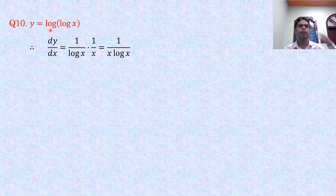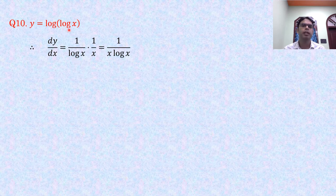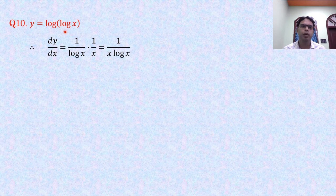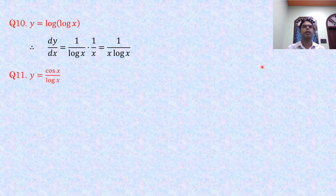Problem 10: y = log(log x). Bases are not given, so consider base e. Applying chain rule twice: dy/dx = 1/log(x) · 1/x = 1/(x·log x).